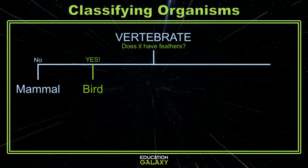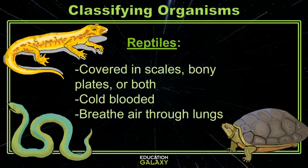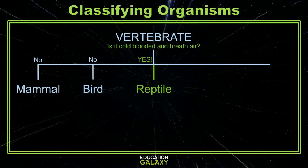Our next class is reptiles. All reptiles have either scales, bony plates, or both. And they are all cold-blooded animals that breathe air.